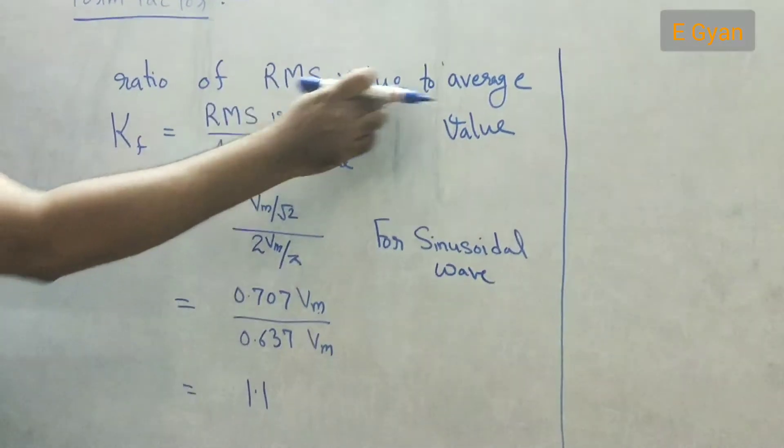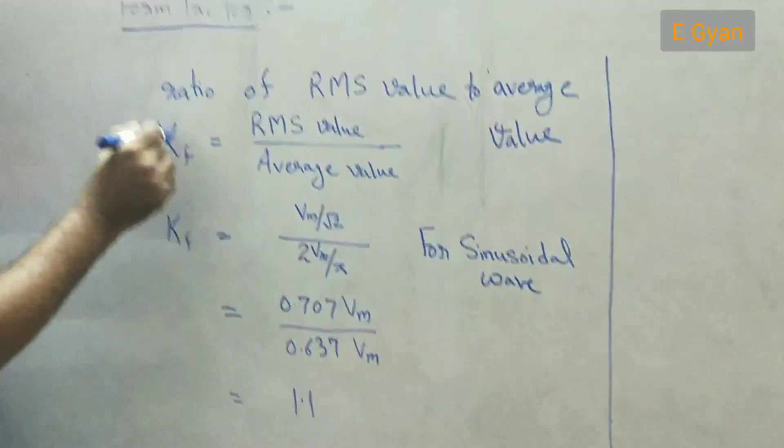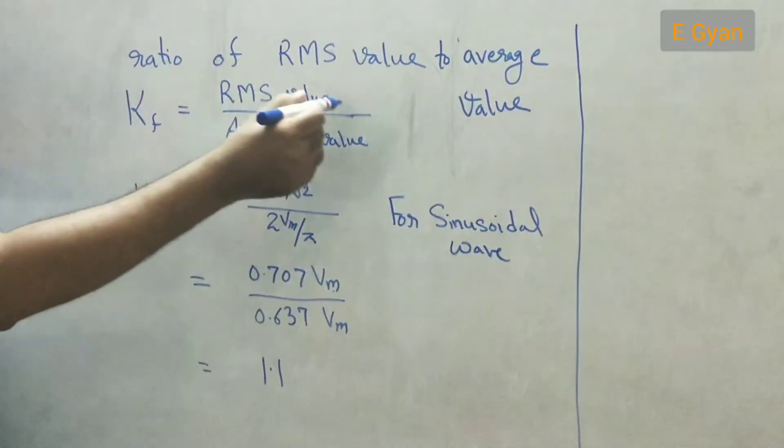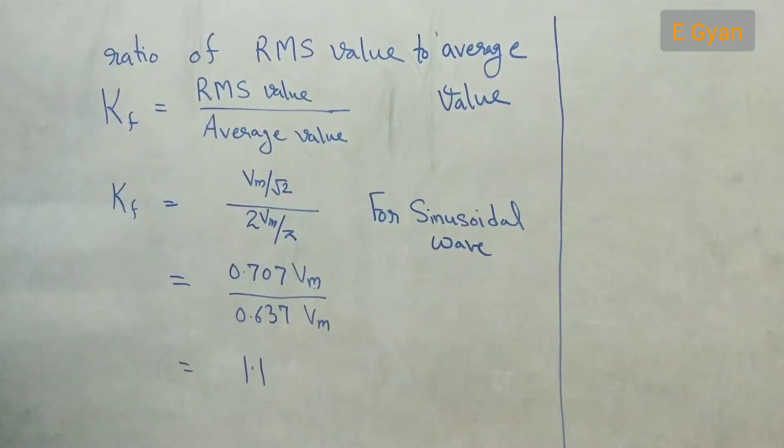It is the ratio of RMS value to average value. That means if we denote the form factor as Kf, it will be RMS value of alternating quantity divided by average value of alternating quantity.